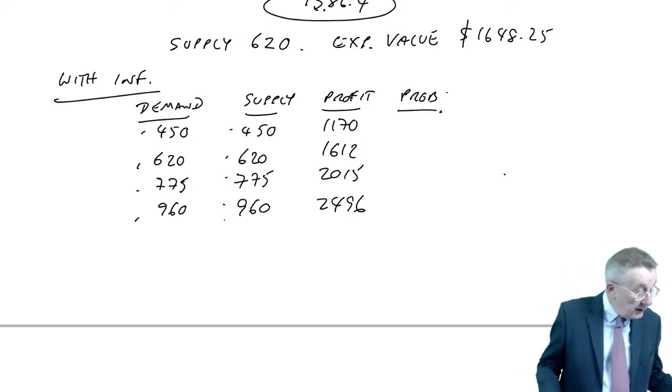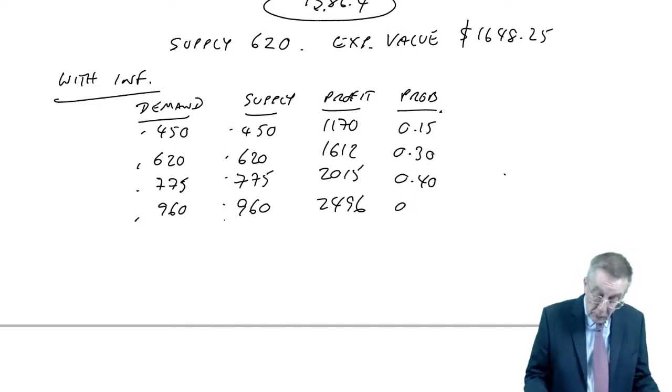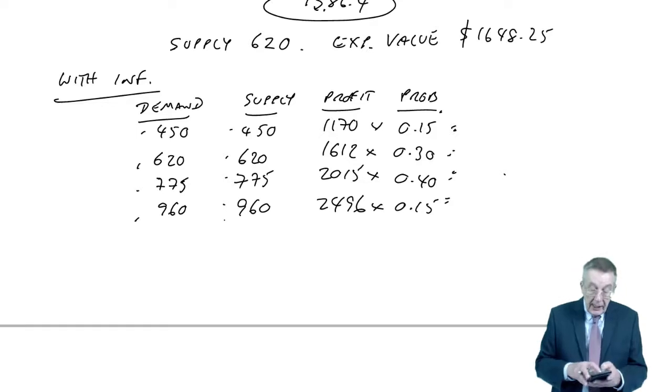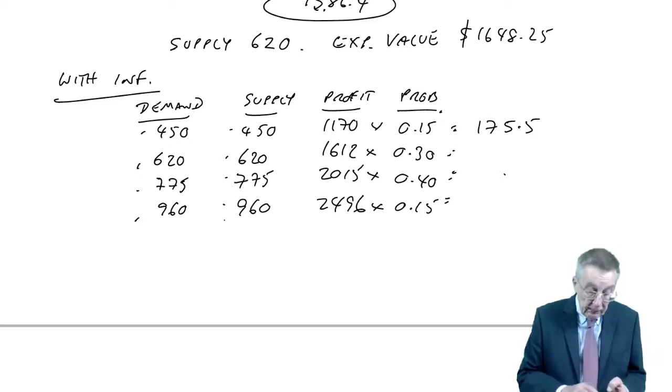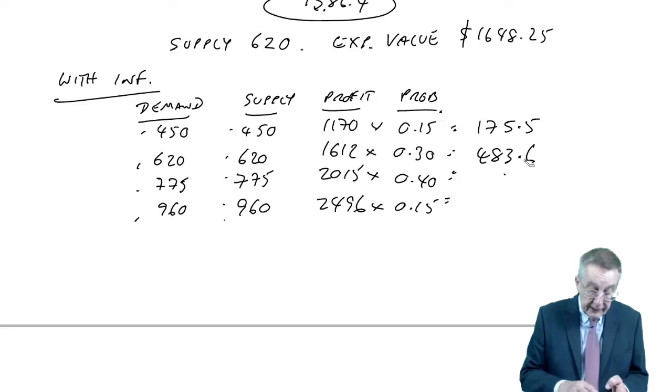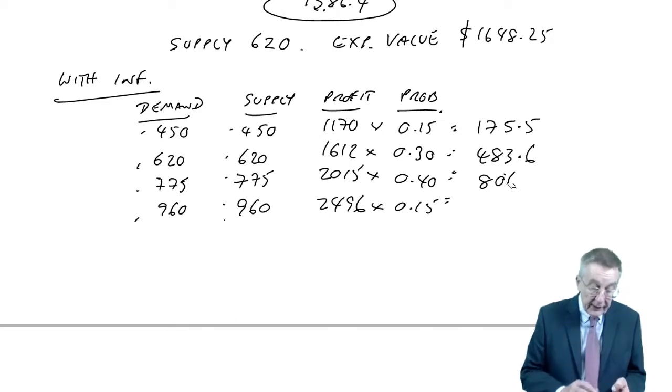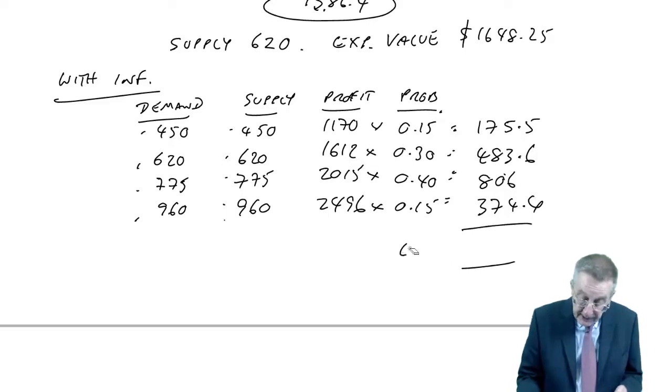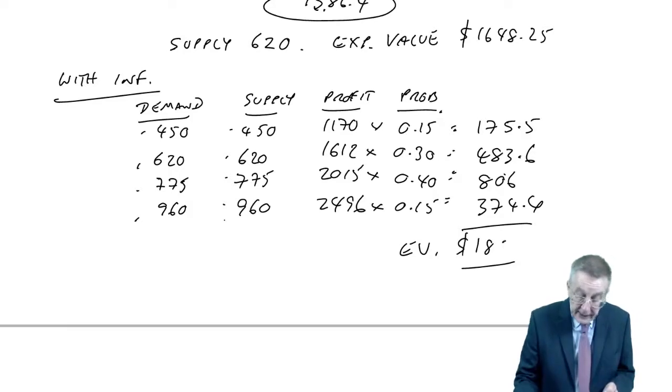And so we'll get back from human resources one of those four answers, depending on what they tell us, we know what we'll do, and we know what the profit will be. But we could end up with any one of those four profits. What's the probability of those profits? It's the probability of demand being 450, etc. 450, the probability is 0.15. 0.3, 0.4, 0.15. So the expected return, if we have this perfect information, 1170 times 0.15 is 175.5. 1612 times 0.3, 483.6. 2015 times 0.4 is 806. And 2496 times 0.15, 374.4. The expected value is therefore 1839.5.